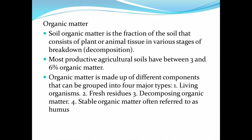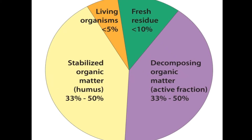Organic matter is made up of different components that can be grouped into four major types: living organisms, fresh residues, decomposing organic matter, and stable organic matter — often referred to as humus.